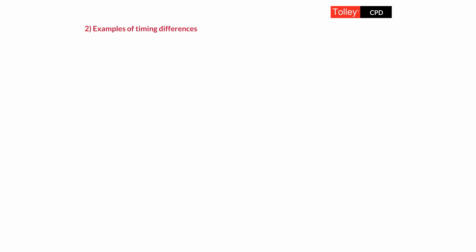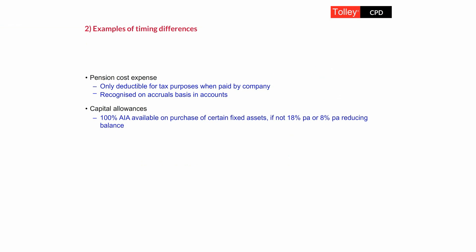For our illustrations today, we'll look at two examples. The first is pension cost expense, which from a corporate perspective is only deductible when actually paid by the company, whereas from an accounting perspective we accrue pension costs that relate to the period. The second example deals with accelerated capital allowances, assuming a 100% AIA is available, while the company depreciates at a different rate — since depreciation is set by the directors to write off the cost of the asset over its useful life.